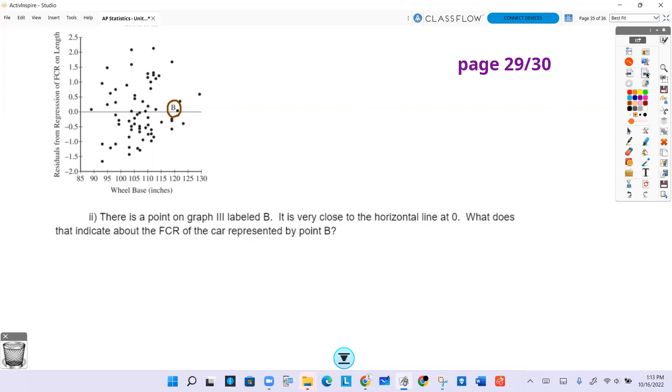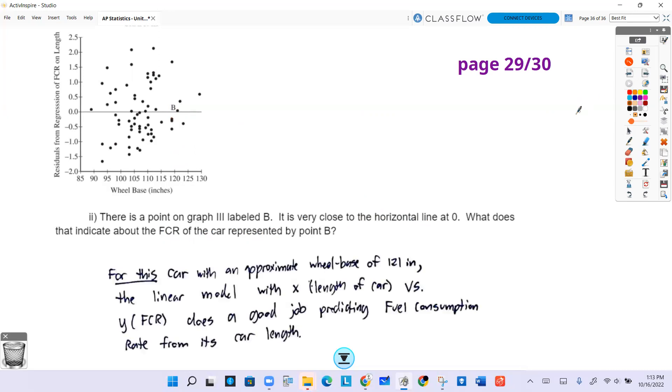At that particular wheelbase of what seems to be like 121 or 122, the linear model with X as your length of car versus Y as your FCR does a good job predicting the fuel consumption. Because if it's close to the horizontal line on the residual plot, it's pretty close to predicted.